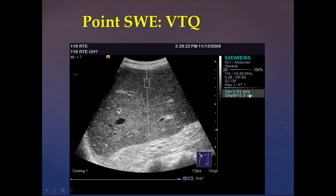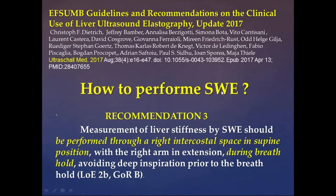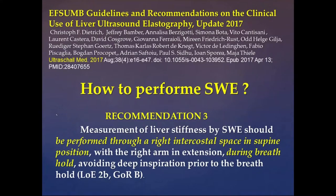For point SWE (VTQ): we use the intercostal approach between the ribs, visualize the liver well, identify the capsule, and place the box one centimeter below the capsule, avoiding vessels. For 2D SWE (Explorer system): we get a good liver view, place a large box, aim for a very homogeneous blue color, and place a ROI or circle inside to get the value in kilopascal. Point SWE gives a box and a number; 2D SWE gives a color map, and inside that we place a ROI for the numeric value.